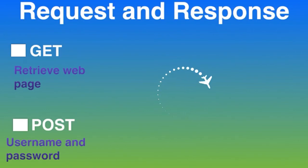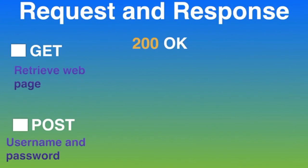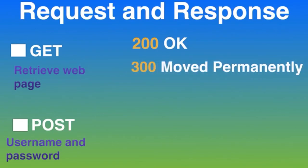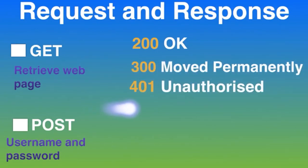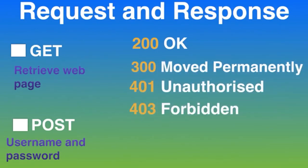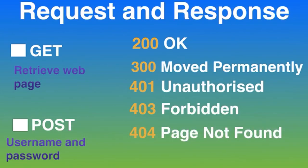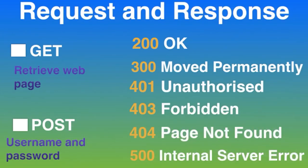The status message is a short description of the status code. There are five categories of status codes: 1xx, 2xx, 3xx, 4xx, and 5xx. The most frequent and most recognized error code is 404, which means that the URL is not recognized or the resource at the location does not exist.